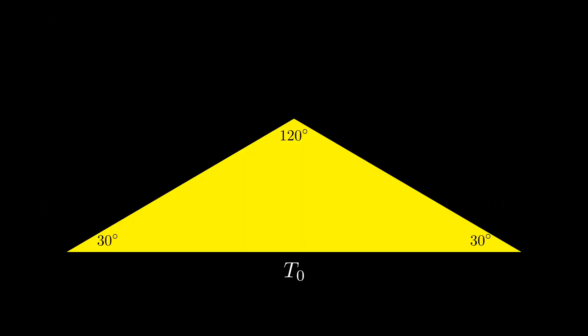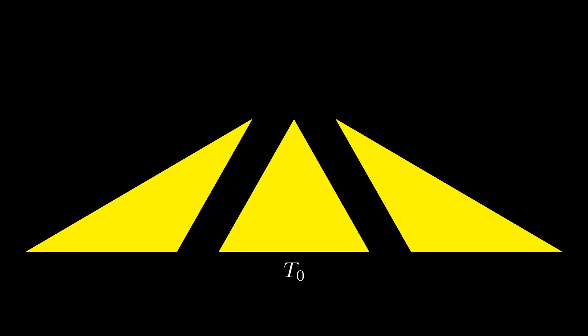Cesàro's construction begins with an isosceles triangle T0 having angles of 30 and 120 degrees. This triangle can be subdivided into three smaller triangles, an equilateral triangle, and two isosceles triangles that are similar to T0.